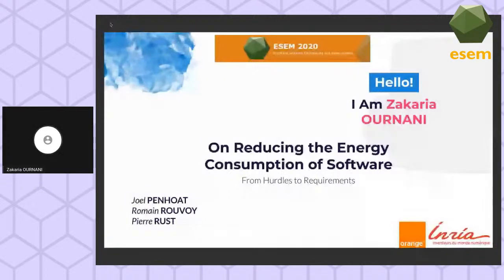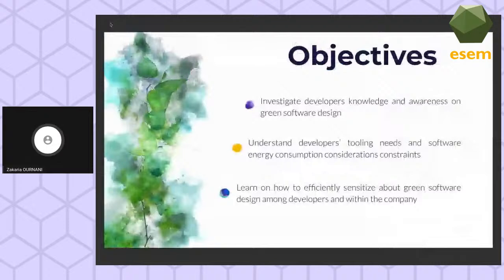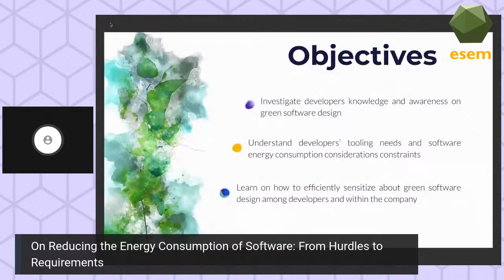Our objectives can be summarized into three main ideas. First, we intend to investigate developers' knowledge and awareness of green software design. Then we aim at understanding the constraints and hurdles developers face and their tooling needs to apply proper green software design. Finally, we want to identify the main awareness means that developers would react to, to create a better understanding of responsibilities around software energy consumption.